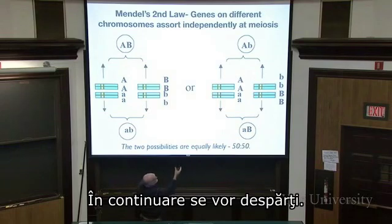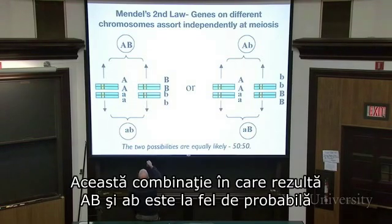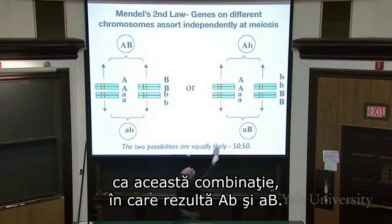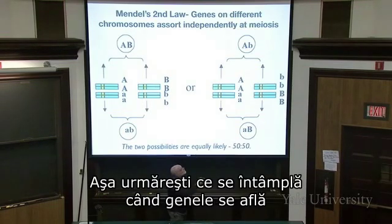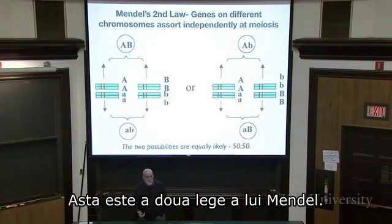We pull the chromosomes apart to make four gametes. The combination where you get big A and big B, and little a and little b, is just as likely as the combination where you get big A and little b, and little a and big B. That's tracking what happens when genes on two different chromosomes form gametes — that's Mendel's second law.